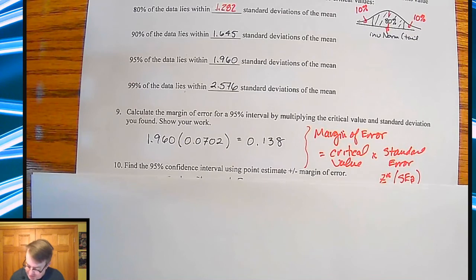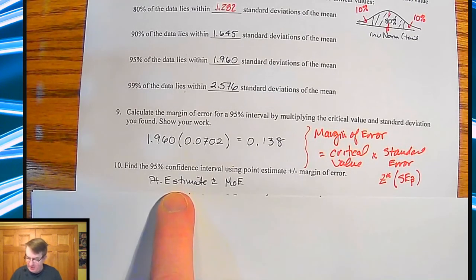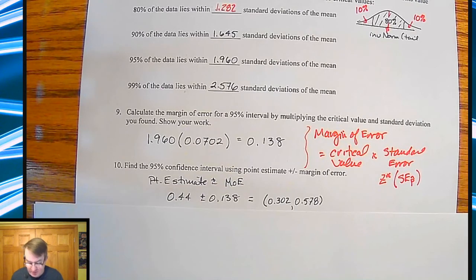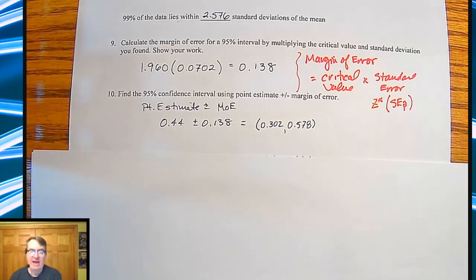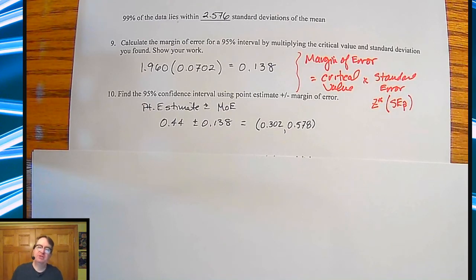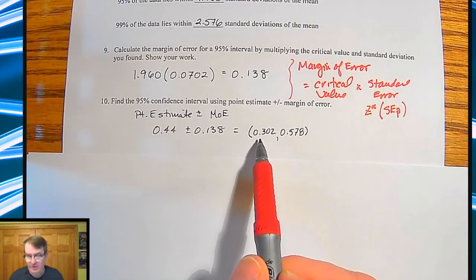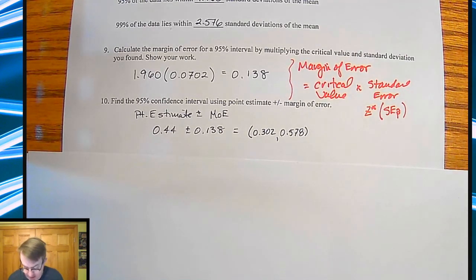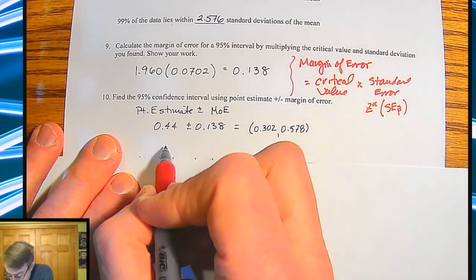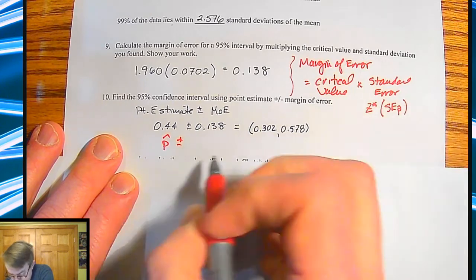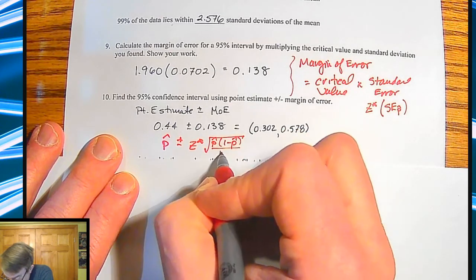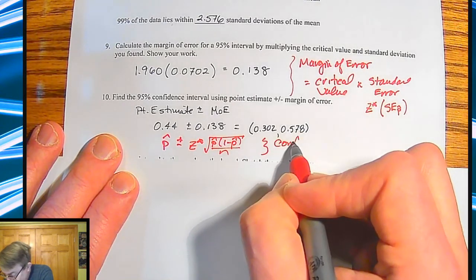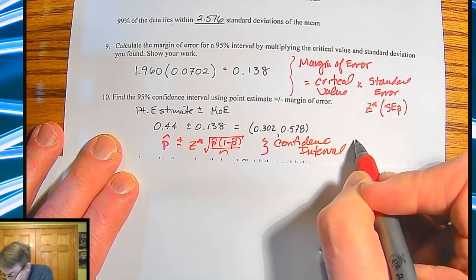To find the 95% confidence interval, use the point estimate plus or minus the margin of error. That gives numbers between 0.302 and 0.578. The full formula is: p-hat plus or minus Z-star times the square root of p-hat times 1 minus p-hat, all divided by n. That is the confidence interval formula for proportions.